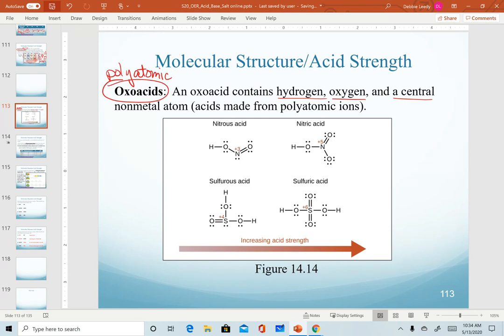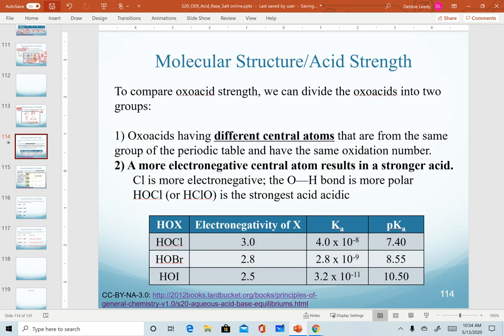We won't be requiring the drawing of Lewis structures, but it is helpful to remind ourselves of the structures of these. When we refer to nitric acid, we write the formula as HNO3, but it's important to remember that the hydrogen is actually bonded to the oxygens, and that's the case for all oxoacids. We can use that information to determine the trends for strong versus weak acids.